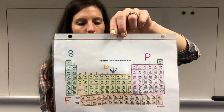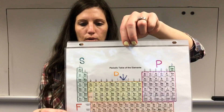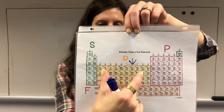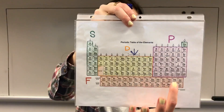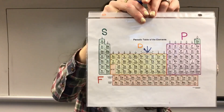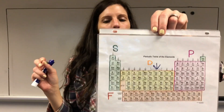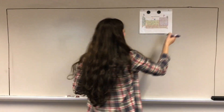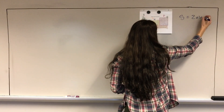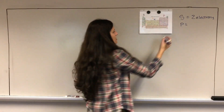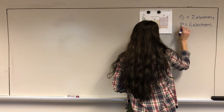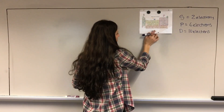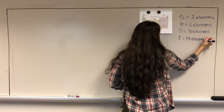You have this version posted on Schoology - you can print it or print a blank one and color it yourself. What you're doing is separating out the blocks: the s subshell block, the d subshell block in yellow, the p subshell block in pink, and the f subshell. Each subshell has a maximum number of electrons it can hold: s can hold up to 2 electrons, p can hold up to 6, d can hold up to 10, and f can hold up to 14.